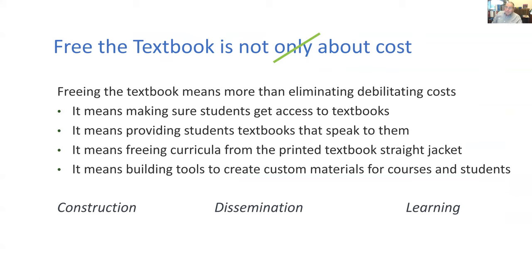So — free the textbook. It's not really about cost. Freeing the textbooks does eliminate debilitating costs, but it's much more than that. It means making sure students get access to the textbooks. It means providing students textbooks that speak to them. We've talked a lot about this this week and also at OER 2020. And it means freeing curricula from the printed textbook straitjacket. Curricula are often locked to the table of contents of the textbook, and it means building tools to create custom materials for courses and students.